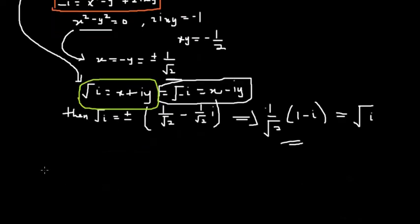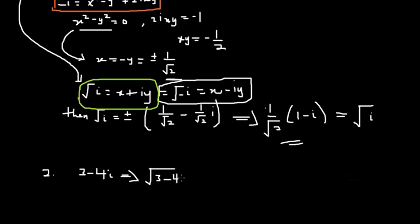The final answer is 1 over root 2 times (1 minus i). Now let's move on to a different example. Let's say we have 3 minus 4i and we are told to find the root of this expression.